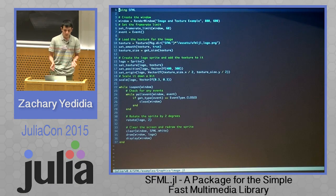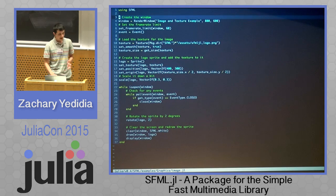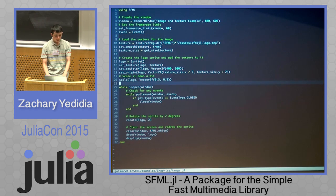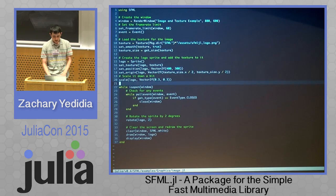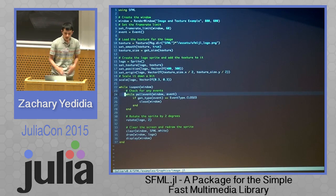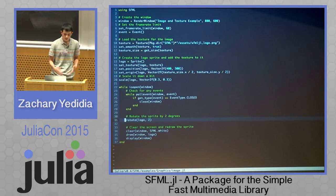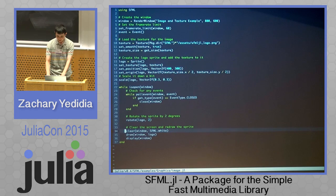I'm going to show a little code to give you a taste of what it looks like. Here's a simple program for rotating an image. You create the window, load the image into a texture, create a sprite — which is a graphics object that can hold an image — and then the loop starts. You check if the X has been pressed, and if so, close the window, then rotate the logo two degrees and draw it. And this is what it looks like.